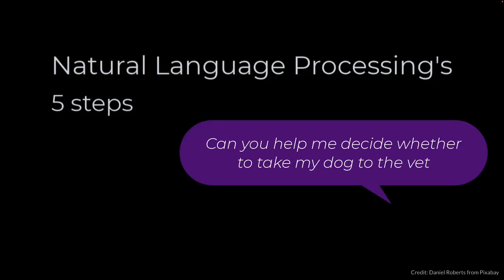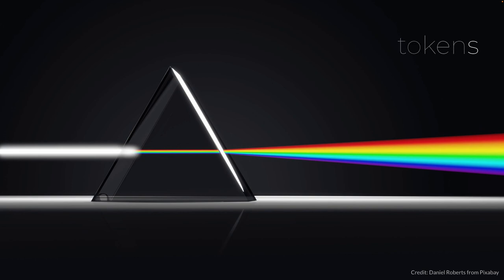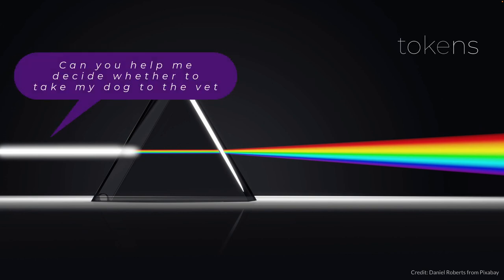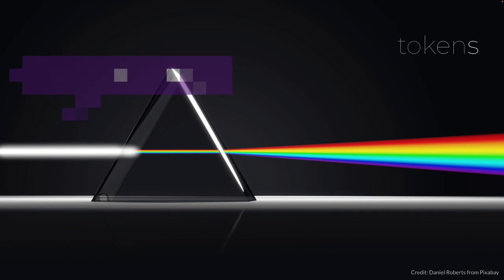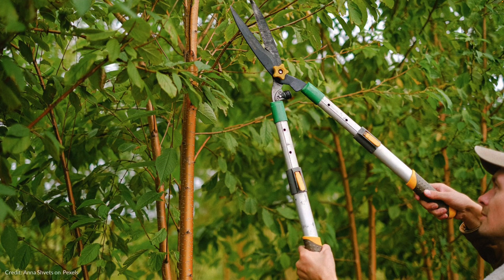Step one is splitting a stream of written or spoken language — which has no apparent structure on the surface — into its smallest semantic units. These are called tokens. In my written example with HyperWrite, 'Can you help me decide whether I need to take my dog to the vet?' gets split into separate tokens, which in this case would be the equivalent of 15 different words. The stream is split.